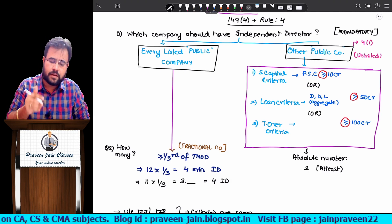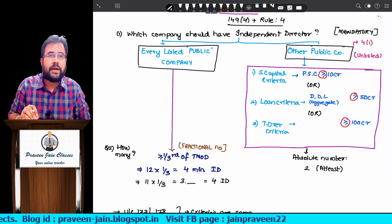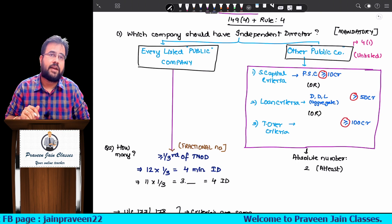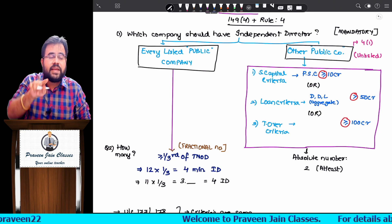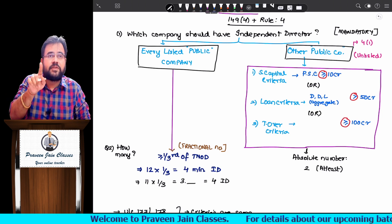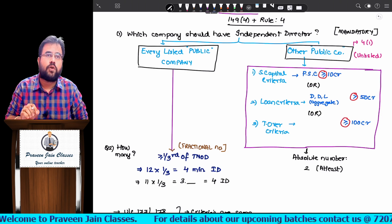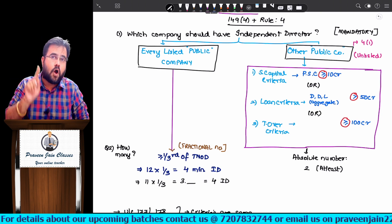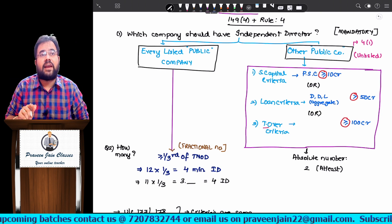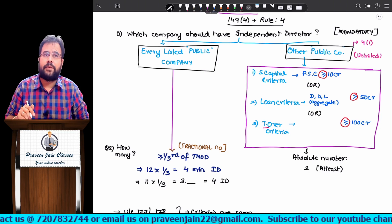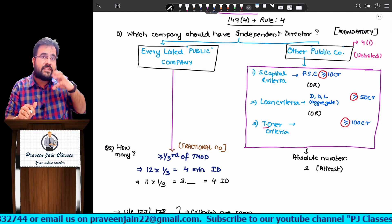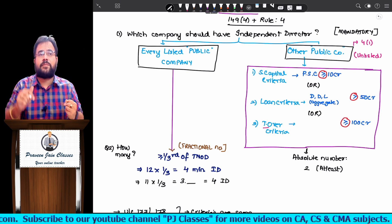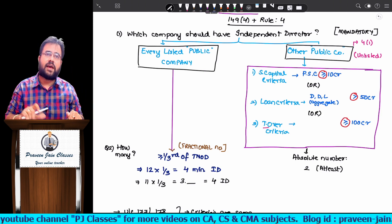Remember, these criteria have to be seen in the previous financial year by looking at audited financial statements, and you have to appoint independent directors in the current year. One important point: for paid-up share capital (10 crores) and turnover (100 crores) criteria, we use greater than or equal to. But for the loan/DDL criterion — deposits, debentures, and outstanding loans — we use only greater than 50 crores. So if the company has exactly 50 crores in DDL, it need not have independent directors, but 1 rupee more and it must.